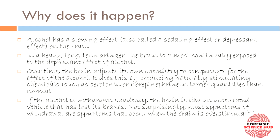The brain, in order to compensate for all the depressing effects of alcohol, starts to release certain stimulating chemicals. Alcohol was leading to production of depressive chemicals, but the brain starts producing stimulating chemicals like serotonin and norepinephrine in larger quantities than it would in a normal person. So the brain is adjusting its own chemistry to compensate for the depressing effects of alcohol.